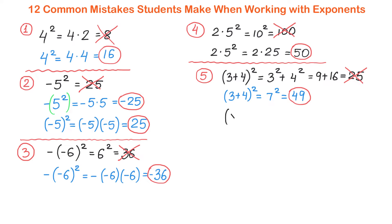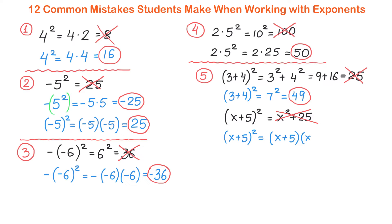Now, what if inside the parentheses we have x plus 5 to the second power? Writing this as x squared plus 25 would be incorrect. To raise x plus 5 to the second power, one method is to rewrite it as (x + 5) times (x + 5) and use FOIL: x times x is x squared, x times 5 is 5x, 5 times x is 5x, and 5 times 5 is 25. The like terms 5x plus 5x give 10x, so the result is x squared plus 10x plus 25.